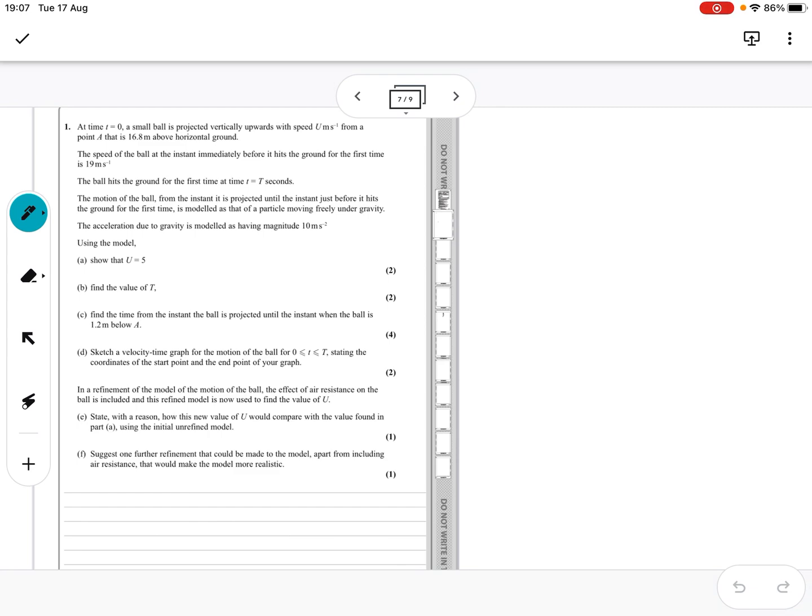So basically we're going to draw a little diagram. We've got a ball at the instant before it hits the ground, so the ball is projected vertically upwards from a height of 16.8 meters, and we show it a bit like this. This will be my u initial speed, this is my final velocity which is 19 meters per second. Here we have gravity acting downwards and gravity is 9.8, no it's 10, so that'll probably be a question later.